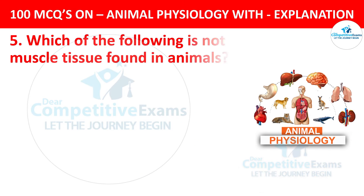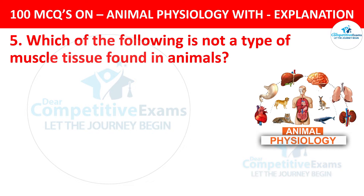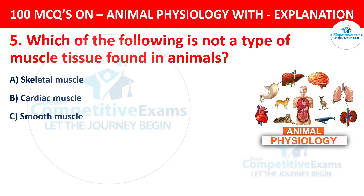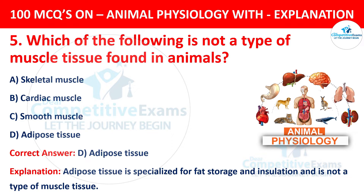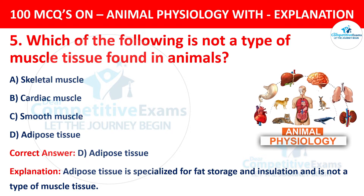Question number 5. Which of the following is not a type of muscle tissue found in animals? The options are skeletal muscle, cardiac muscle, smooth muscle, or adipose tissue. The correct answer is D, adipose tissue. Adipose tissue is specialized for fat storage and insulation, and it is not a type of muscle tissue.